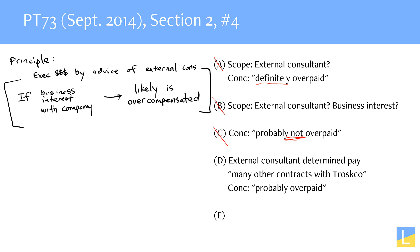What about answer choice D? We have an external consultant who is determining the pay of a president. We know that that external consultant has many other contracts with the company — so that's a business interest that the consultant has with that company. And then we have the right kind of conclusion: therefore, probably overpaid. Likely means probably. That means answer choice D is correct.